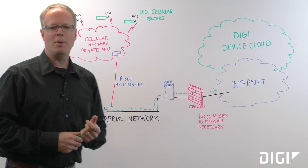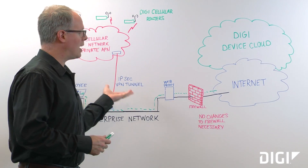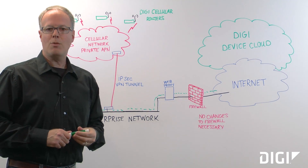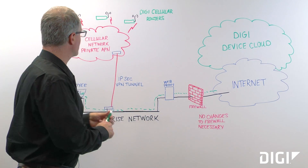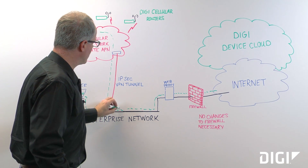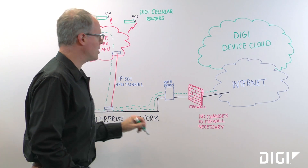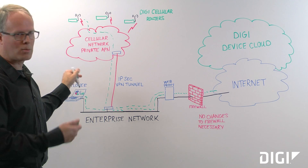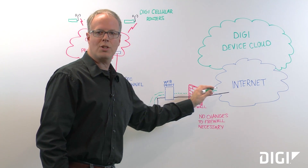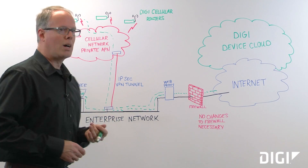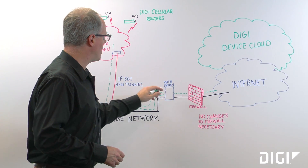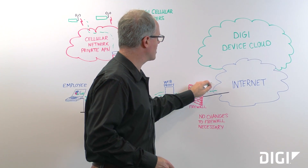We've added the capability to our Digi routers to utilize this web proxy solution. You simply configure the Digi routers to connect to the web proxy, so they connect all the way through the cellular network, through the VPN tunnel, and then to the web proxy — just like an employee's laptop or computer. The proxy then sends that traffic out to the internet, just as if it was an employee browsing to your CRM solution, but instead sends this traffic out to Device Cloud.